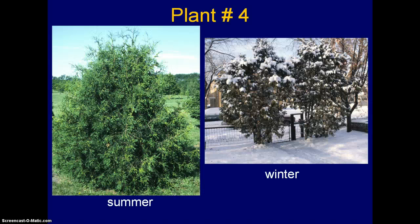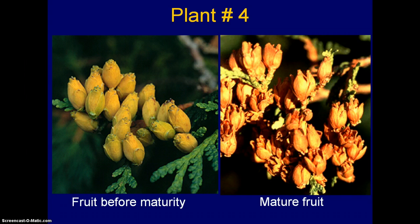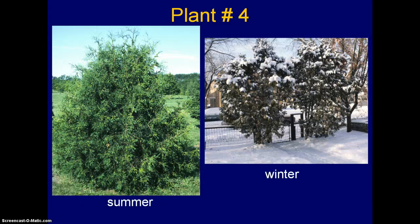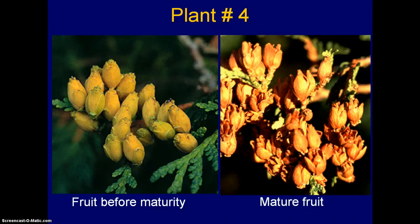Plant number four, summer and winter. Here's a picture that shows more detail about the leaves — the arrows point to individual leaves. Here's the fruit before maturity, and here's the fruit when it's pretty much mature and it's opened up. Just to refresh: summer and winter, leaves, fruit structure.